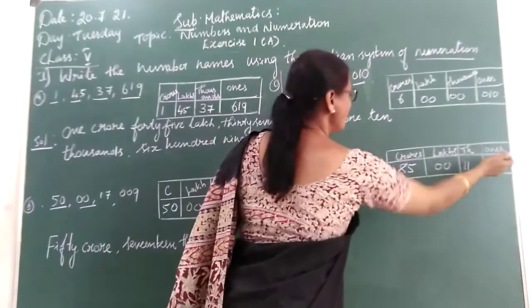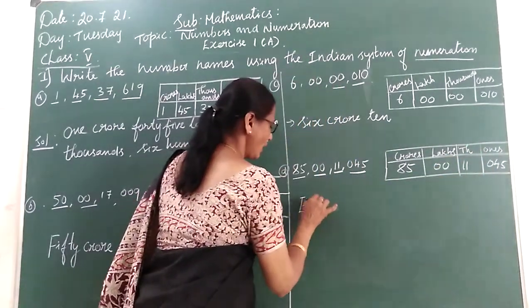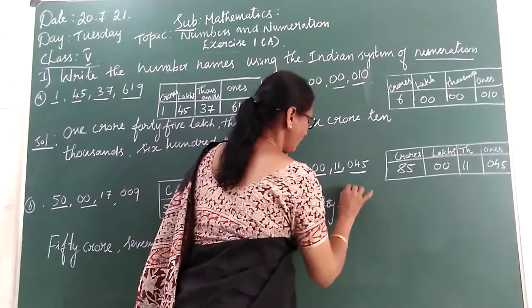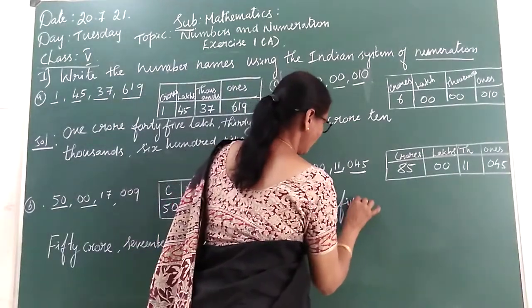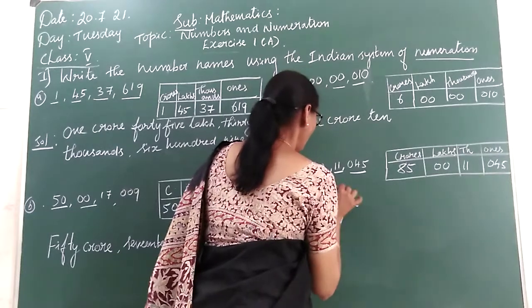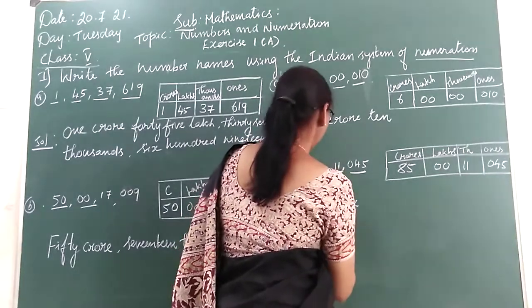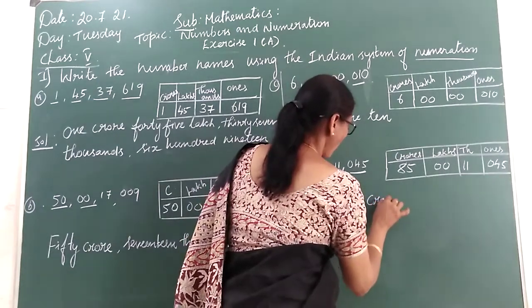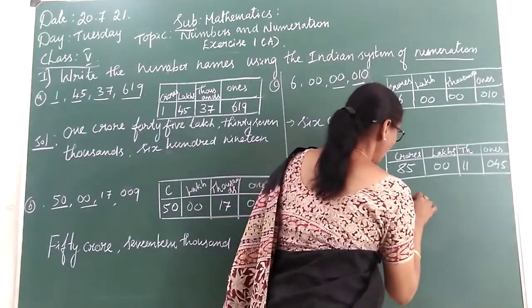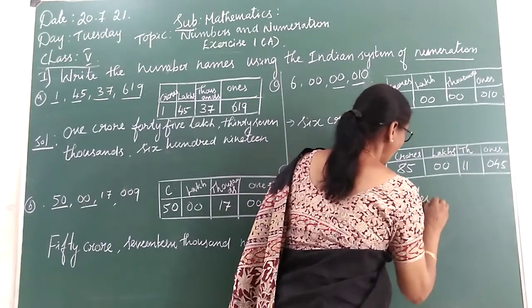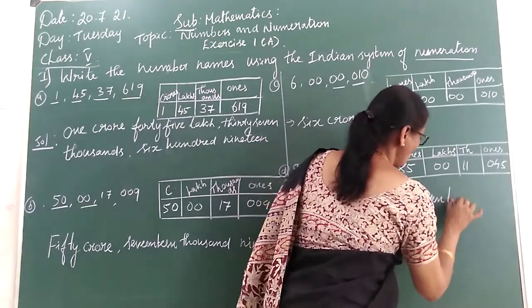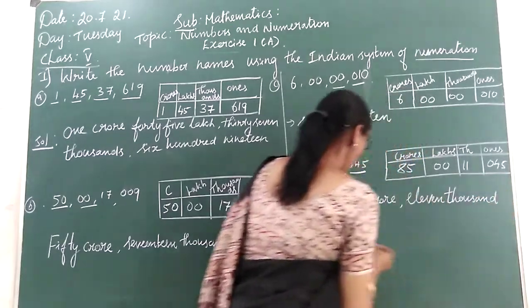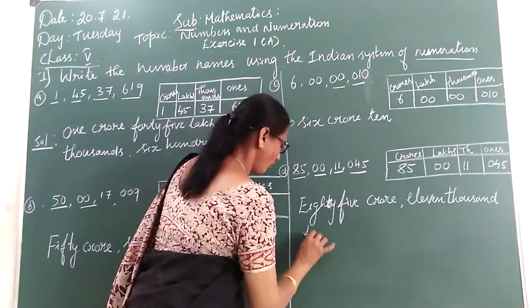E-I-G-H-T-Y, eighty-five crores, eleven thousand, F-O-R-T-Y, forty-five. Eighty-five crore eleven thousand forty-five.